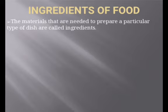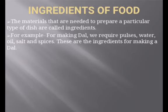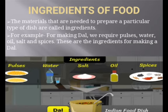What do we mean by ingredients? Ingredients are all those materials that are required to prepare a particular type of dish. For example, for making dal, we require pulses, water, oil, salt, and spices. These are the ingredients for making dal. You can see in this picture that the ingredients of dal are shown: pulses, water, salt, oil, and spices like turmeric and chili.